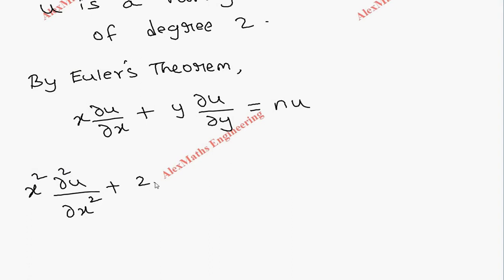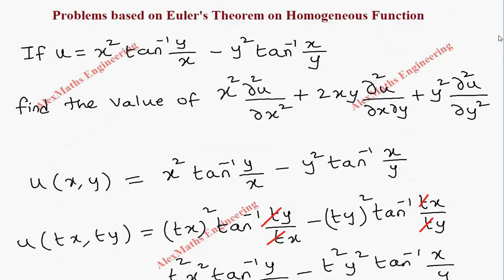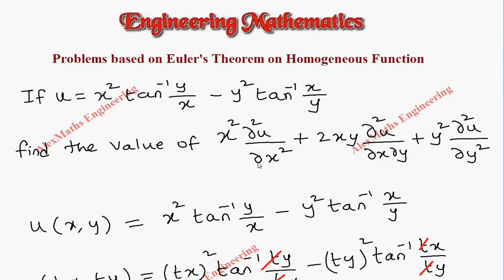And the second statement is: x squared times partial squared u by partial x squared plus 2xy times partial squared u by partial x partial y plus y squared times partial squared u by partial y squared equals n times (n minus 1) times u.